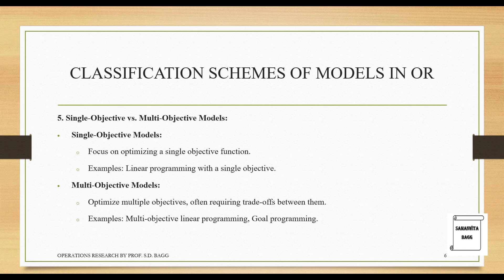Single objective versus multi-objective models: single objective models focus on optimizing a single objective function, for example maximizing profit or minimizing loss of an organization. Multi-objective models optimize multiple objectives, often requiring trade-offs between them. Examples include multi-objective linear programming and goal programming, where you must strike a balance so that you are neither over-investing nor losing out by under-investing.